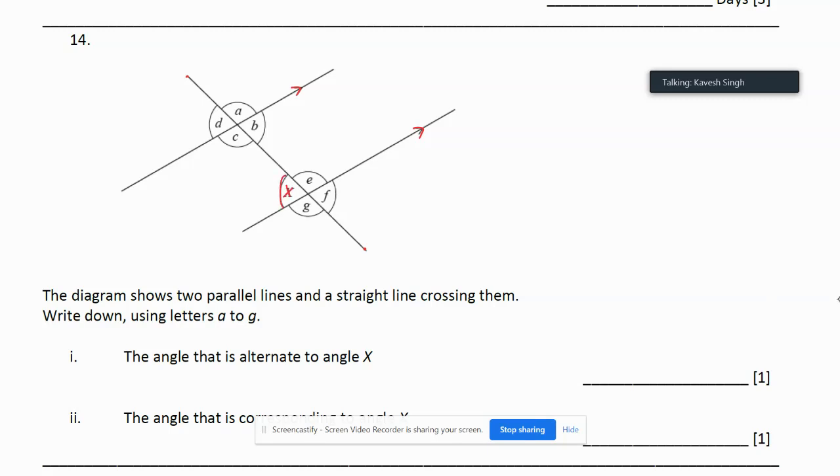What we must remember with regards to alternate angles: when you have alternate angles you can have a Z shape. Sometimes your Z shape produces acute angles like that, sometimes your Z shape produces obtuse angles like that.